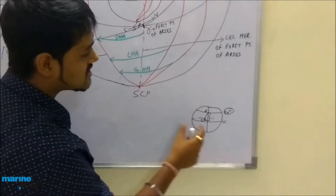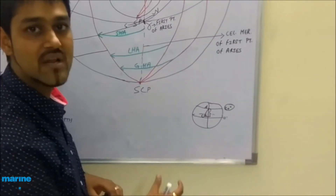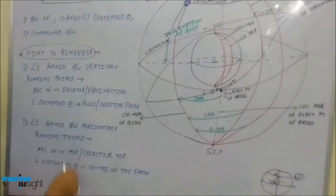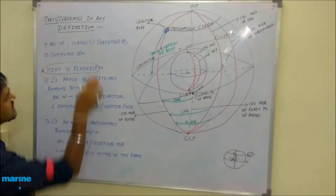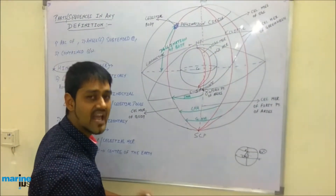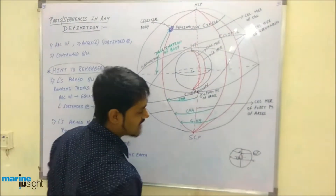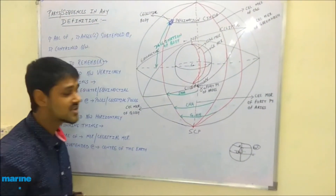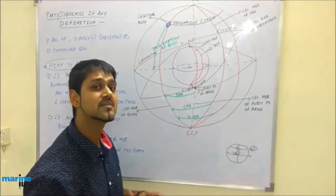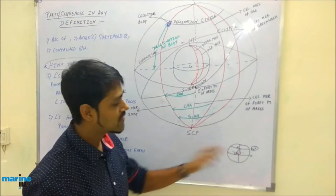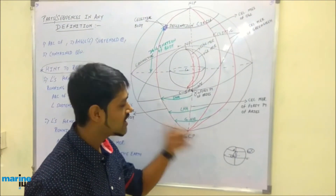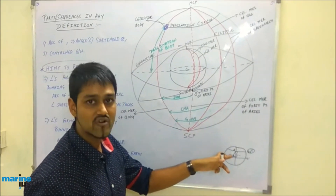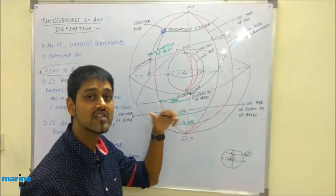By now you must have realized this is one of the simplest ways to remember anything. Latitude's replication on the celestial sphere is declination, meaning the definition of declination will be very similar to that of latitude. The only difference is wherever I say 'equator' I will say 'equinoctial,' and wherever I say 'meridian' I will say 'celestial meridian.'